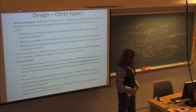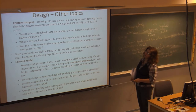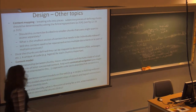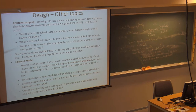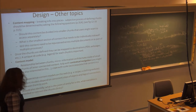Where we left off was at content mapping. Content mapping is trying to decide how to break information into chunks — into pieces where you would group things together. The questions you would ask, from page 314, are: should this content be divided into smaller chunks, what is the smallest section, and will the content need to be used multiple times?